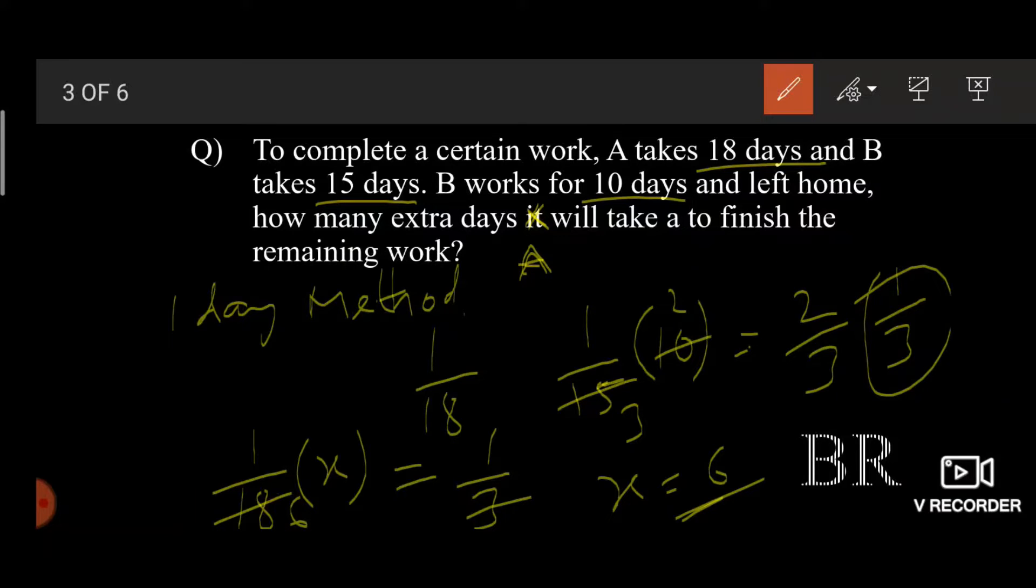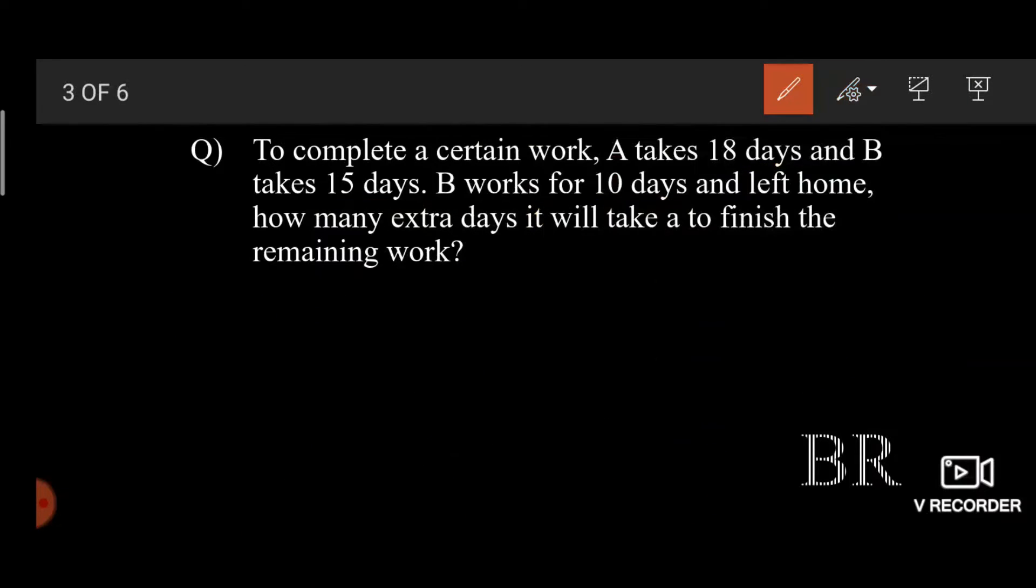This is one method and the other one is the units method. I consider this method the easiest. So A takes 18 days to complete a certain amount of work and B takes 15 days to complete a certain amount of work. So LCM of 18 and 15 gives 90.